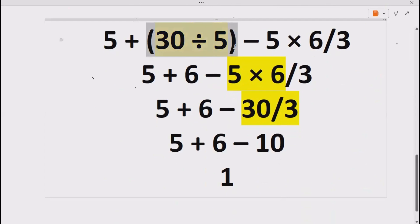Now we have 5 + 6 - 5 × 6 ÷ 3. Now according to BODMAS or PEDMAS, we have to do multiplication going from left to right. So 5 into 6 gives us 30.